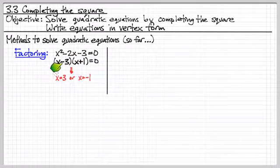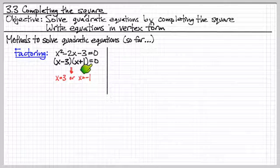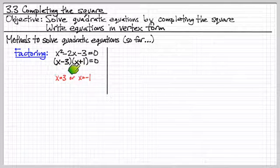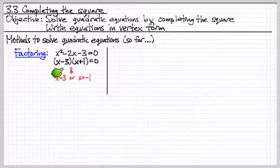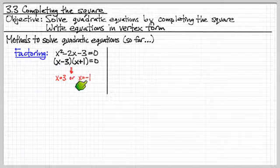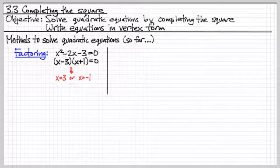We've learned that we can factor quadratic equations. If we factor it down, we can then see this A times B equals zero structure. Either A is zero or B is zero. Either x equals three, that would create a solution, or x equals negative one, that would also create a solution. So factoring was one method.